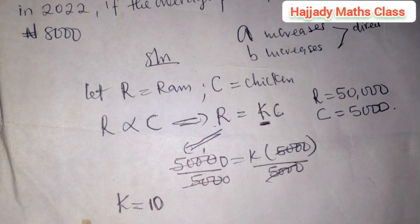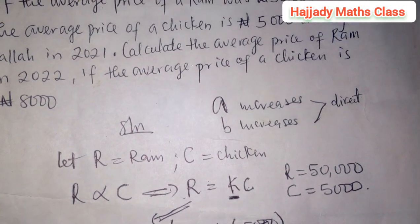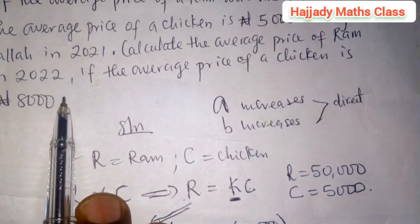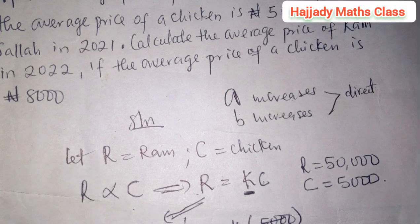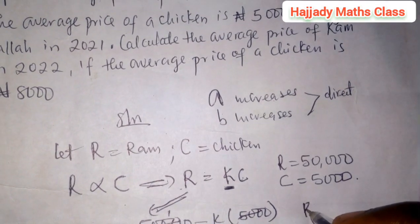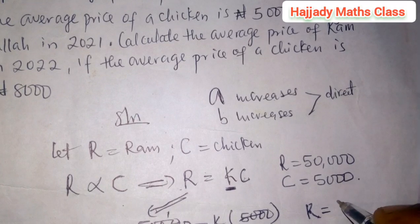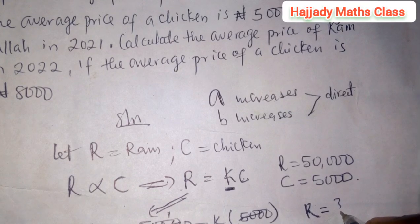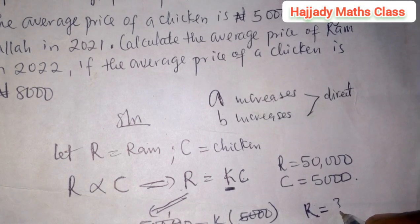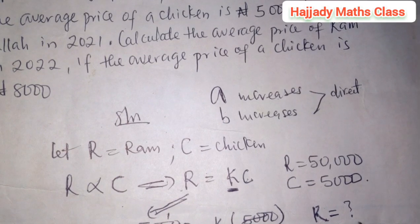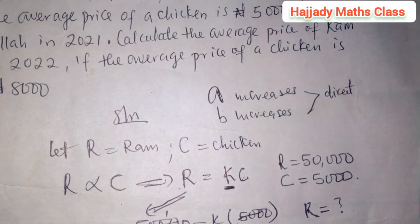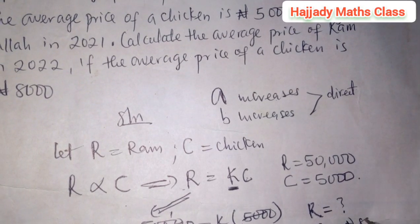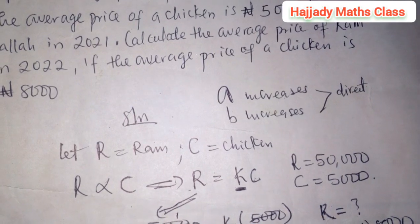The question now continues: calculate the average price of gram in 2022 if the average price of chicken is 8,000. What will now be the value of gram in year 2022 so that you can budget yourself? It's not that you get to where they are selling the gram and find it difficult to buy. What will be the price of gram for this year, knowing the average price of chicken is now 8,000 lira?